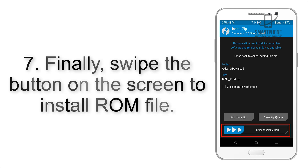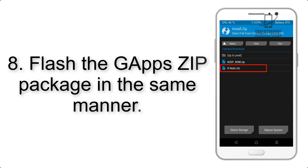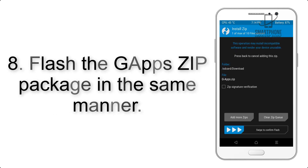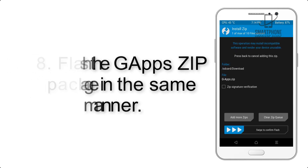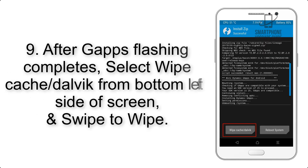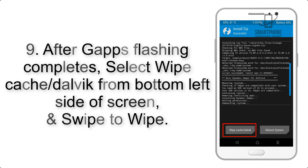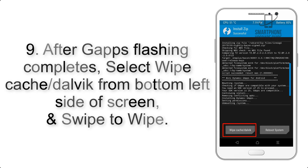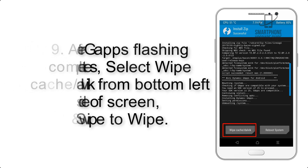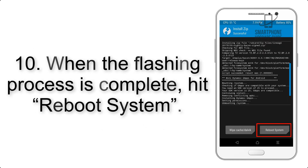Step 7: Swipe the button on the screen to install the ROM file. Step 8: Flash the GApps zip package in the same manner. Step 9: After GApps flashing completes, select Wipe Cache and Dalvik from the bottom left side of the screen and swipe to wipe.